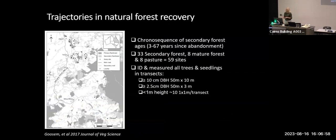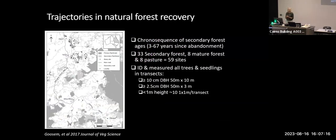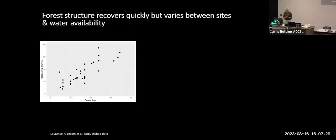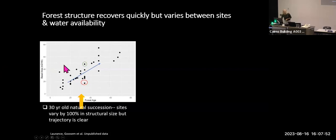We've studied trajectories in natural forest recovery on the tablelands through a chrono-sequence of secondary forest ages ranging from 3 to 67 years. We had 33 sites of secondary forest, 8 sites of mature forest, and 8 pasture sites - 59 sites total - where we identified all trees and seedlings along 50-metre transects. Here I've got forest age on the x-axis and a measure of forest structure called basal area on the y-axis.